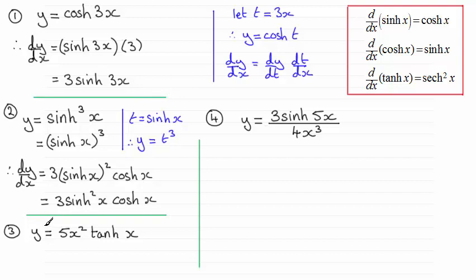Now in number 3, y equals 5x²tanh(x). We use the product rule here. So we've got dy/dx equals—if I take the first part here, 5x², and differentiate that, that's going to be 10x, and multiply it with tanh(x). And then it's plus, and then we take the 5x² and multiply it by the differential of tanh(x), which we can see is sech²(x).